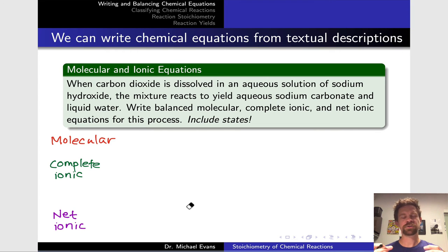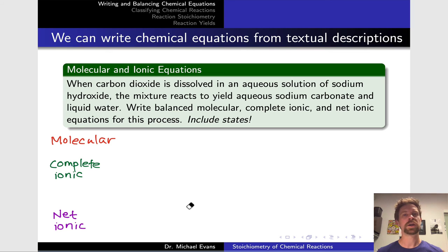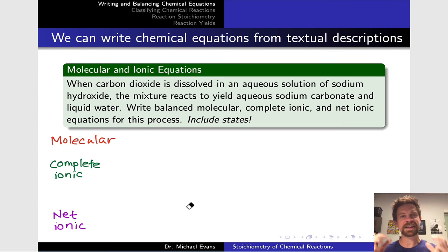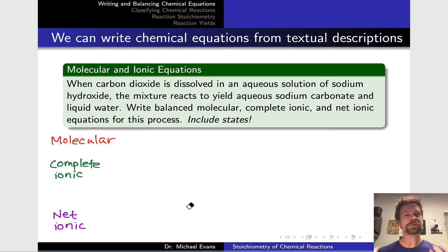We commonly need to take a textual description of a reaction and translate it into a chemical equation form, which makes it easier to apply stoichiometry and think about the reaction at the molecular level. In this example, when carbon dioxide is dissolved in an aqueous solution of sodium hydroxide, the mixture reacts to yield aqueous sodium carbonate and liquid water. Our goal is to write the molecular, complete ionic, and net ionic equations with states of matter for all species.